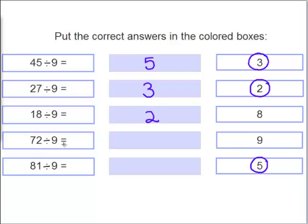72 divided by 9 equals what? Yes, it's 8. So, the last one we know is 9. And 81 divided by 9 equals 9. 9 times 9 equals 81.